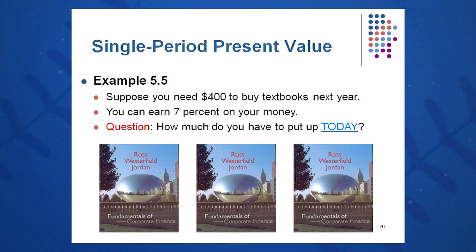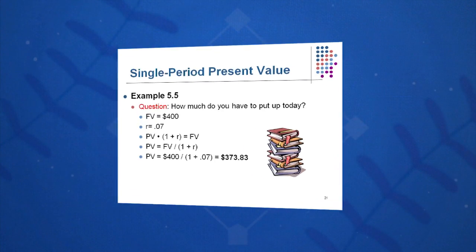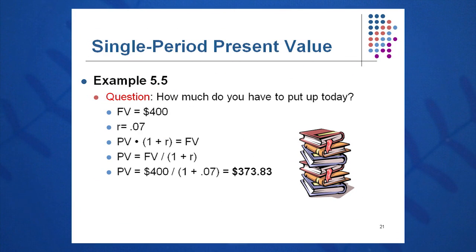There are a lot of very practical uses of this equation. How much do I need to invest today if I need $400 to buy books next semester and I can earn 7% over the course of a year? I know I need $400 next year. PV equals FV divided by one plus r to the t: 400 divided by 1.07, and I get an answer of $373.83. I need to put that amount of money into the bank today at 7% to get my $400 by the end of next year.